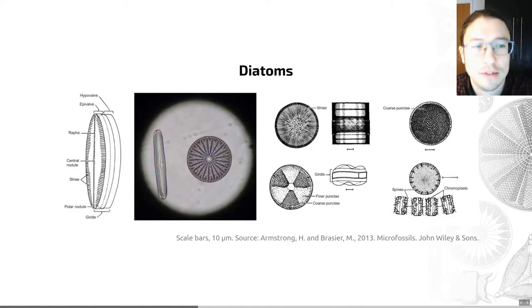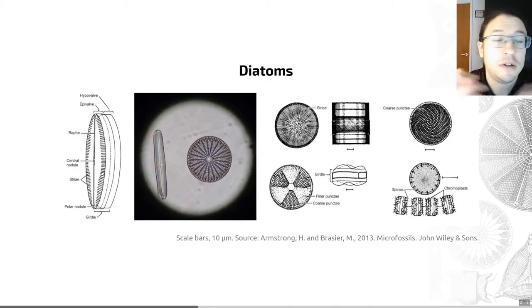You also have the pennate diatoms, shown on the left-hand side of this image. These have elliptical valves with pores arranged in pairs and are typically found in freshwater environments. So that's how you can tell, as a rule of thumb, marine from freshwater diatoms.